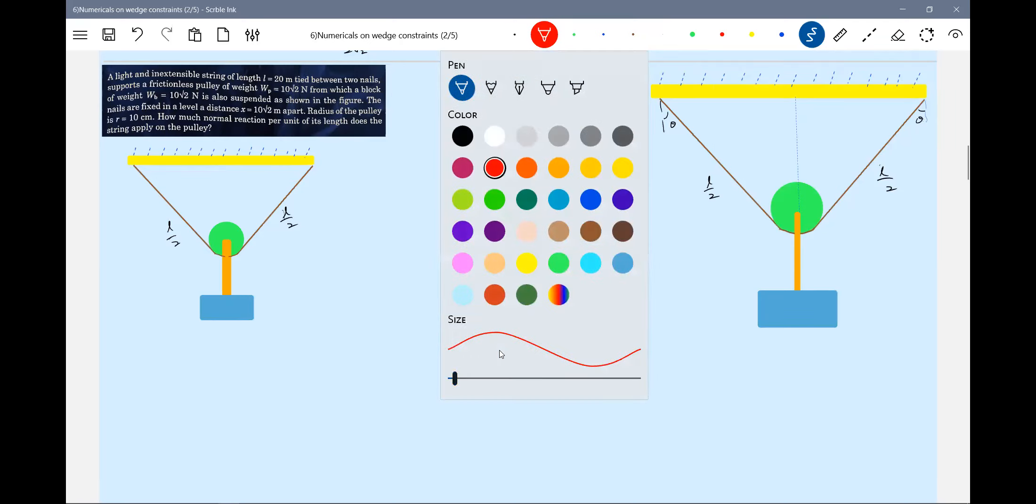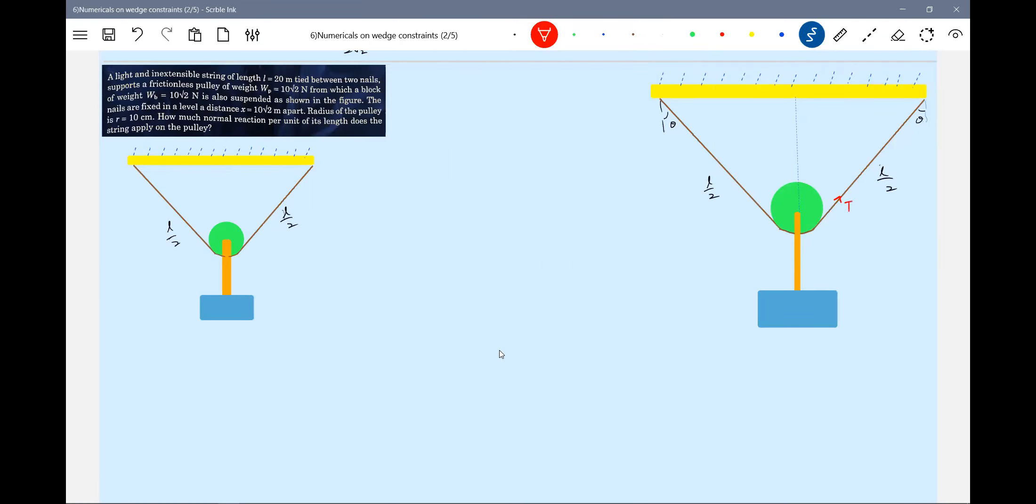Forces always act away from the body here. There's a tension component T sine theta, T cos theta by two - sorry, two T cos theta - should balance the weight of the pulley and the weight of the block.